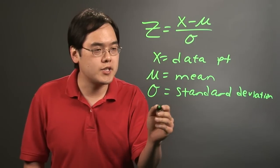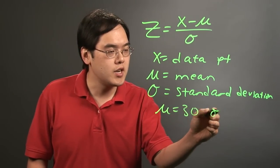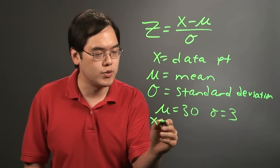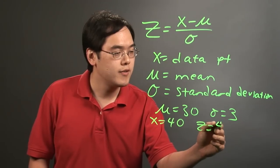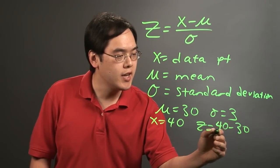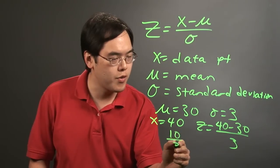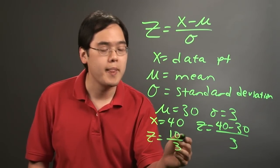So if you have, let's just say the mean was 30, standard deviation was 3, and you want to find the z-value for x is equal to 40, just plug them in. So you have z is equal to 40 minus 30 over 3. So that'll be 10 over 3, and that's not really reducible. So your z-score is going to be 10 thirds.